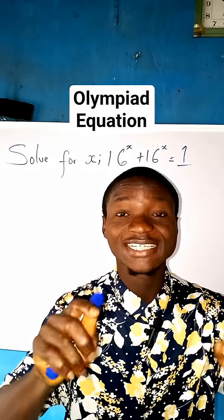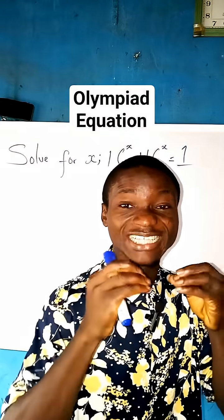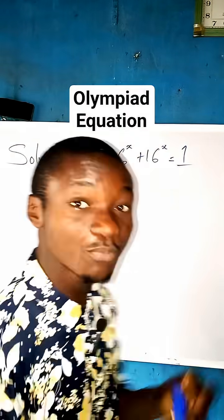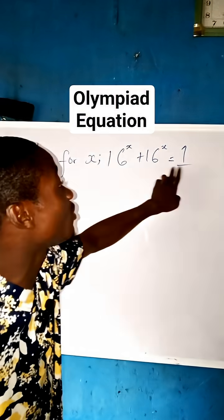Wait, let us really solve this question. One minute, let's solve it. It is an Olympiad question, very simple. Look at it. You see solve for x: 16^x + 16^x = 1.